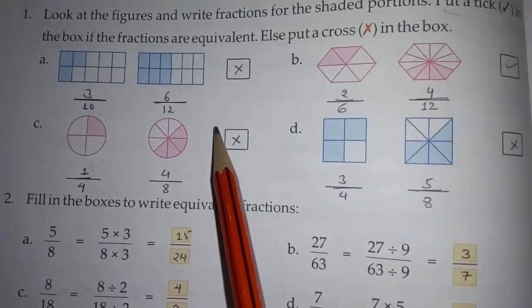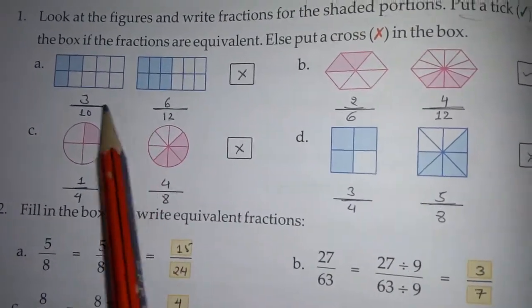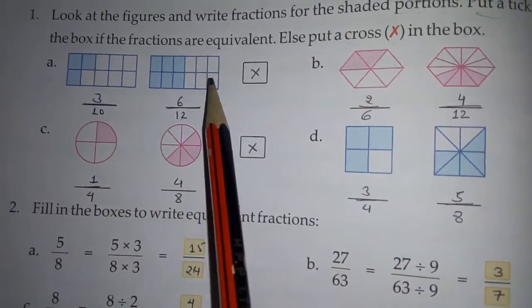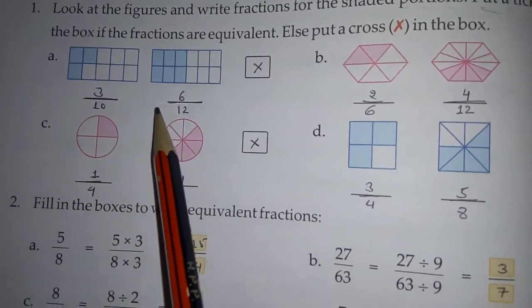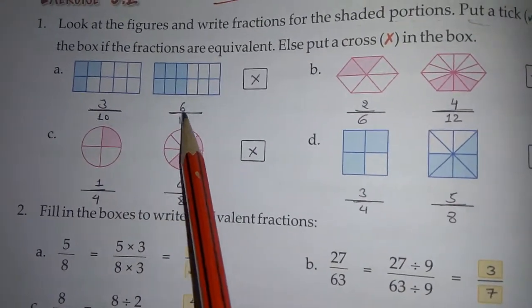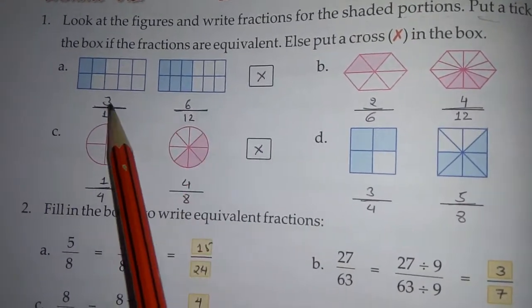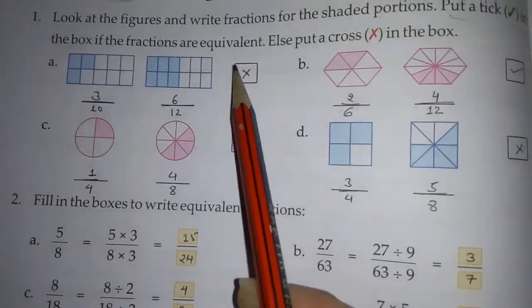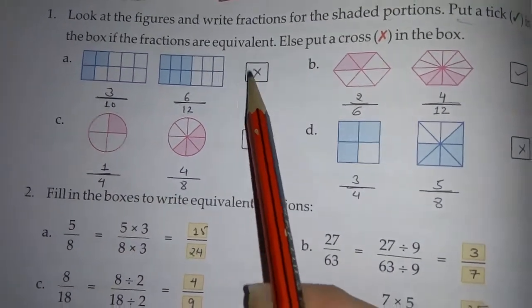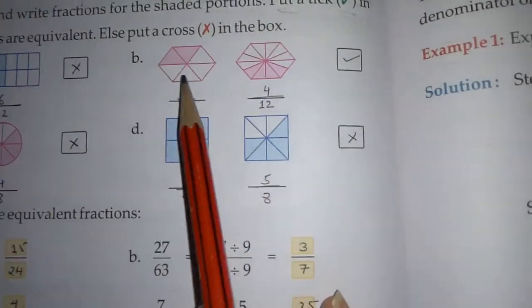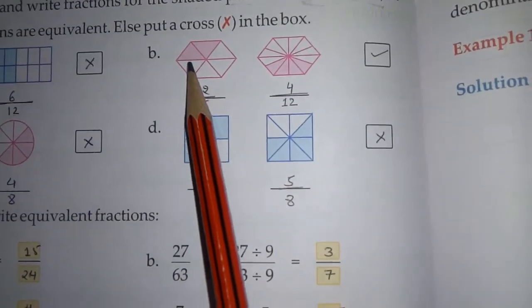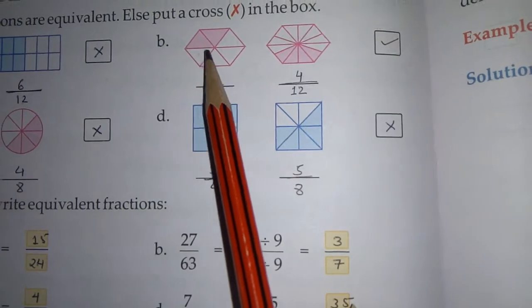Ab kya ye equivalent hain? Equivalent means barabar — agar hum divide karein to same fraction mile. 3 by 10 aur 6 by 12 — nahi milta, that's why we write cross here. Next figure dekho: 1, 2, 3, 4, 5, 6 — total six parts, 2 colored. So 2 by 6.